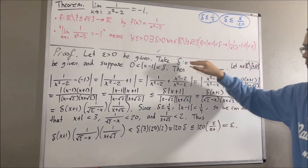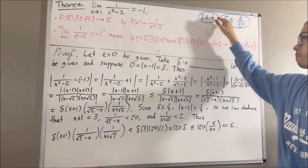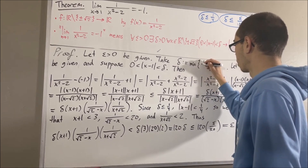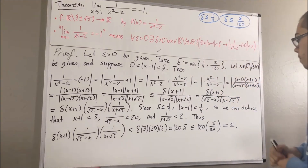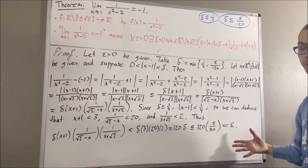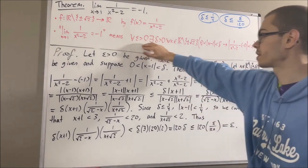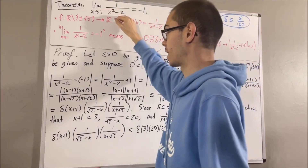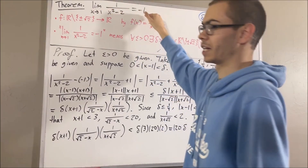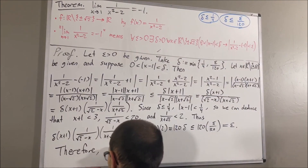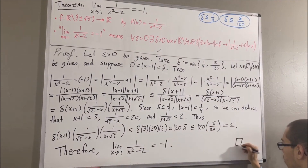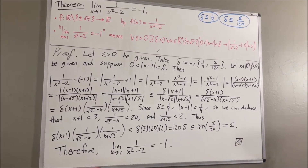So if we define delta to be the smaller of one-fourth and epsilon over 120, then this argument follows and we have shown that the statement is true. Therefore, we have proven that the limit of 1 over x squared minus 2 as x approaches 1 is equal to negative 1. This completes the proof.